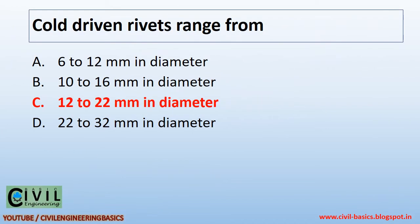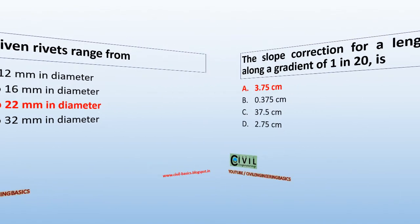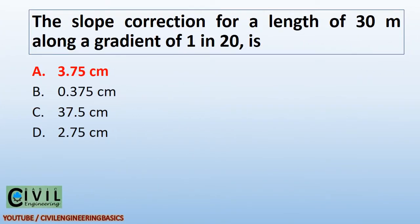Cold driven rivets range from 12 to 22 mm in diameter. The slope correction for a length of 30 m along a gradient of 1 in 20 is 3.75 cm.